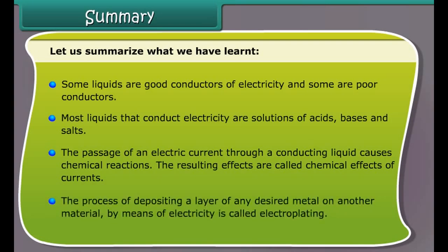Summary: Let us summarize what we have learned. Some liquids are good conductors of electricity and some are poor conductors. Most liquids that conduct electricity are solutions of acids, bases, and salts. The passage of an electric current through a conducting liquid causes chemical reactions. The resulting effects are called chemical effects of currents. The process of depositing a layer of any desired metal on another material by means of electricity is called electroplating.